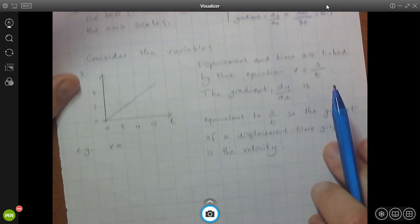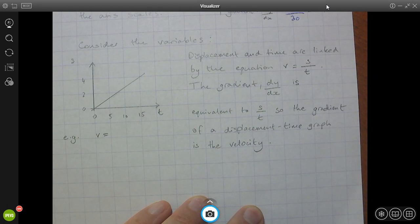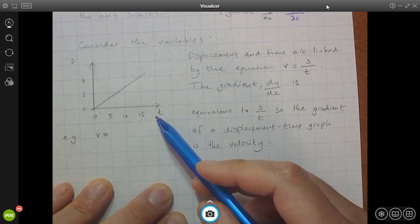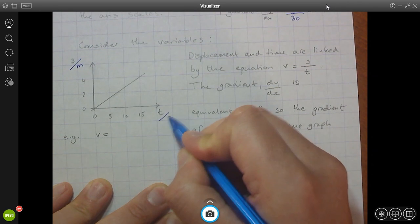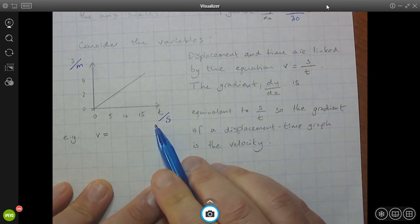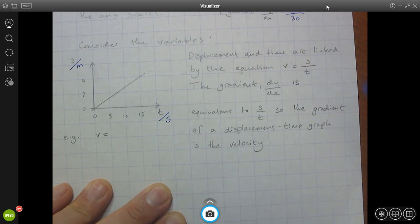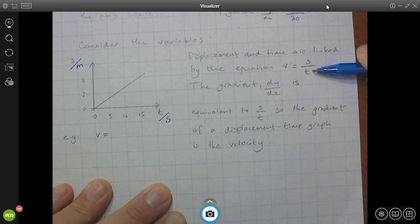But we are considering the variables because this is science. And this is using maths to make something meaningful, to make this graph meaningful. So here I've got a displacement time graph and my displacement is in metres and my time is in seconds. So not only do I know what the variables are, I know what the scale on the axis represents. And these two variables are linked by this equation. We know that velocity is equal to displacement over time.